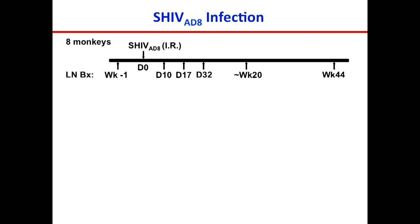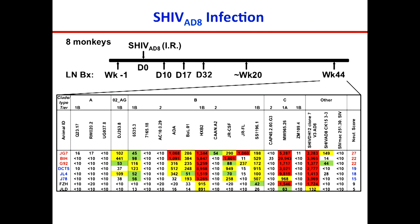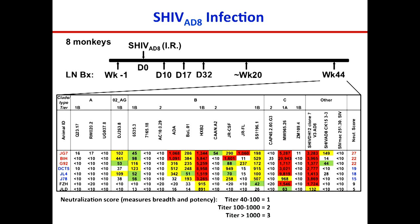We took eight rhesus monkeys, infected them with SHIV-88, took lymph node biopsies before and at many time points after infection, and collected blood and plasma. At 44 weeks, we took plasma from these eight animals, tested it against a variety of viruses, and looked at the breadth and potency of neutralization. We came up with a neutralization score — the higher the number, the better the strength and breadth. We had three animals with very high scores, three with intermediate, and two with low. Throughout this presentation, good neutralizing monkeys will be in red, intermediates in blue, and weak neutralizers in black.